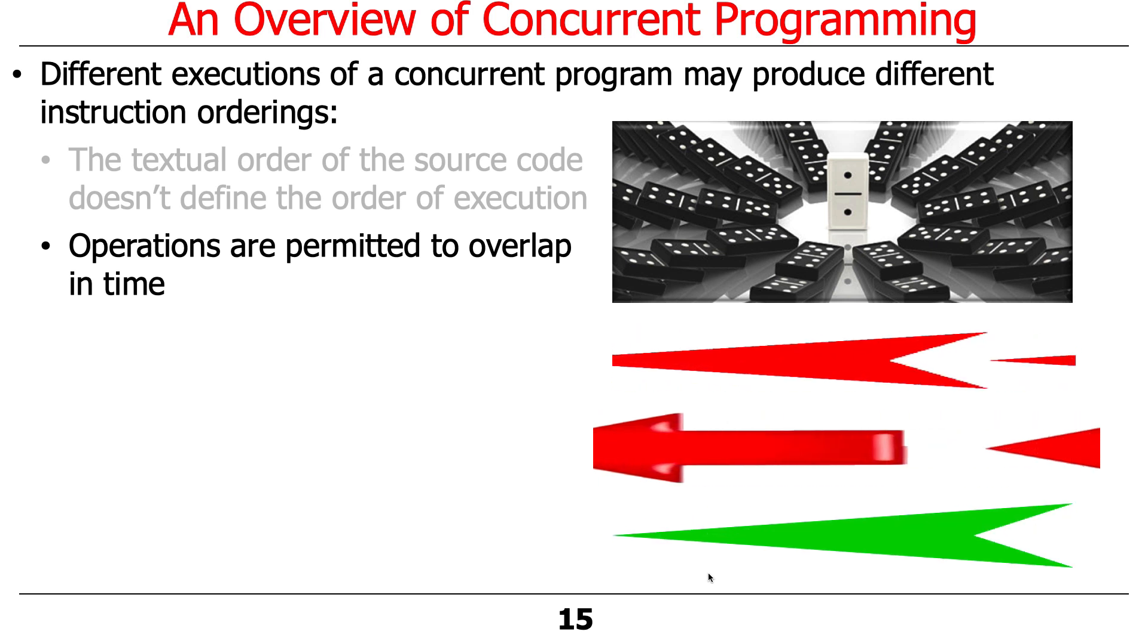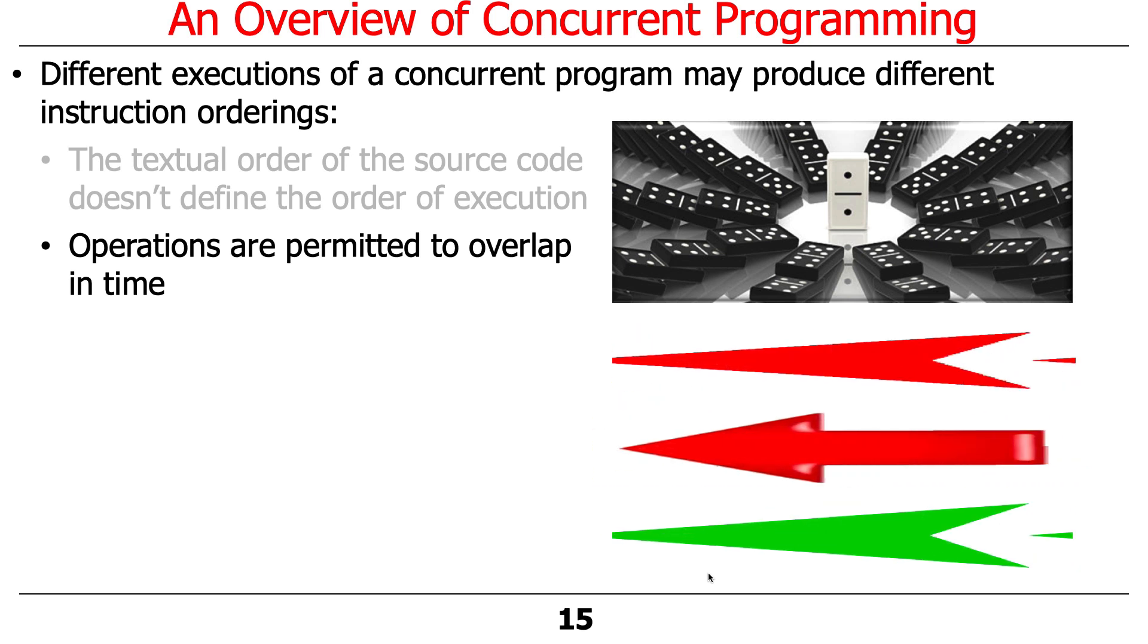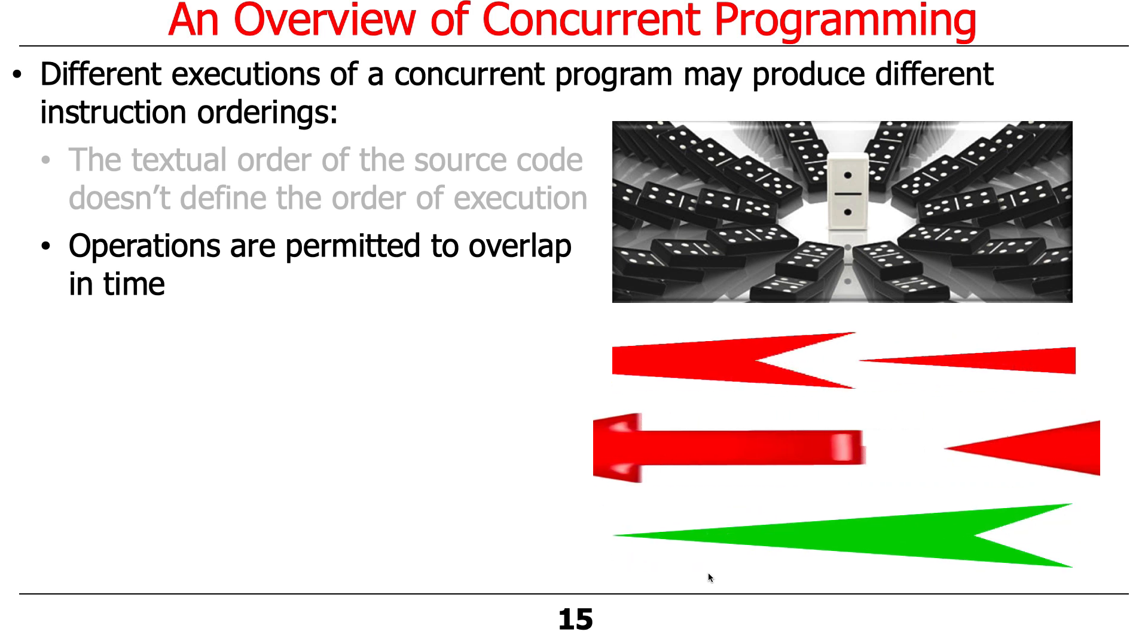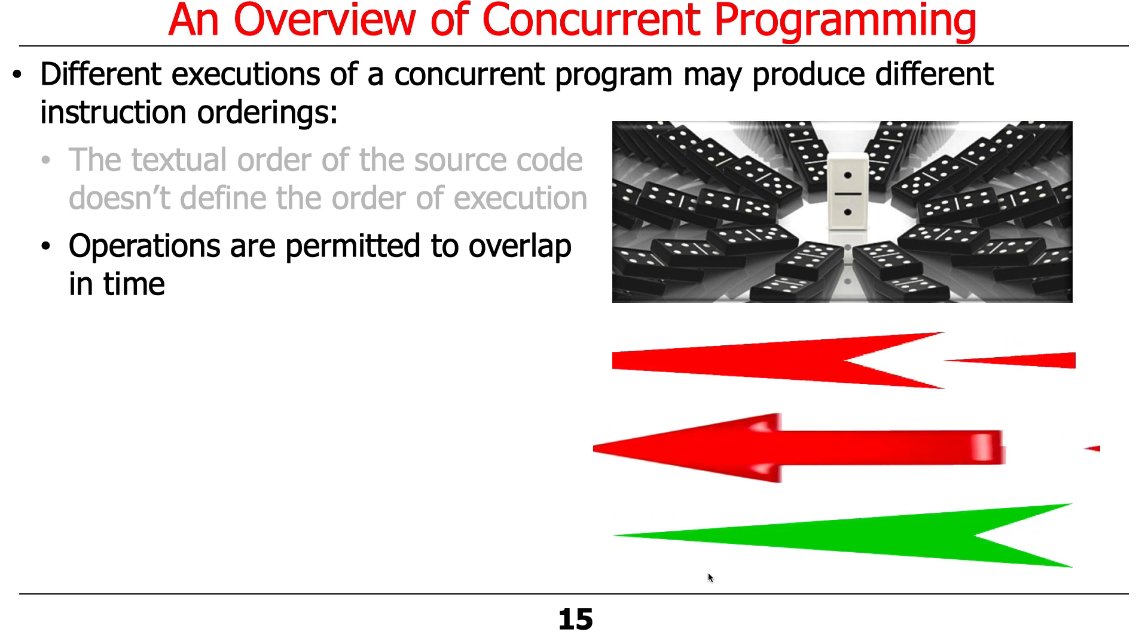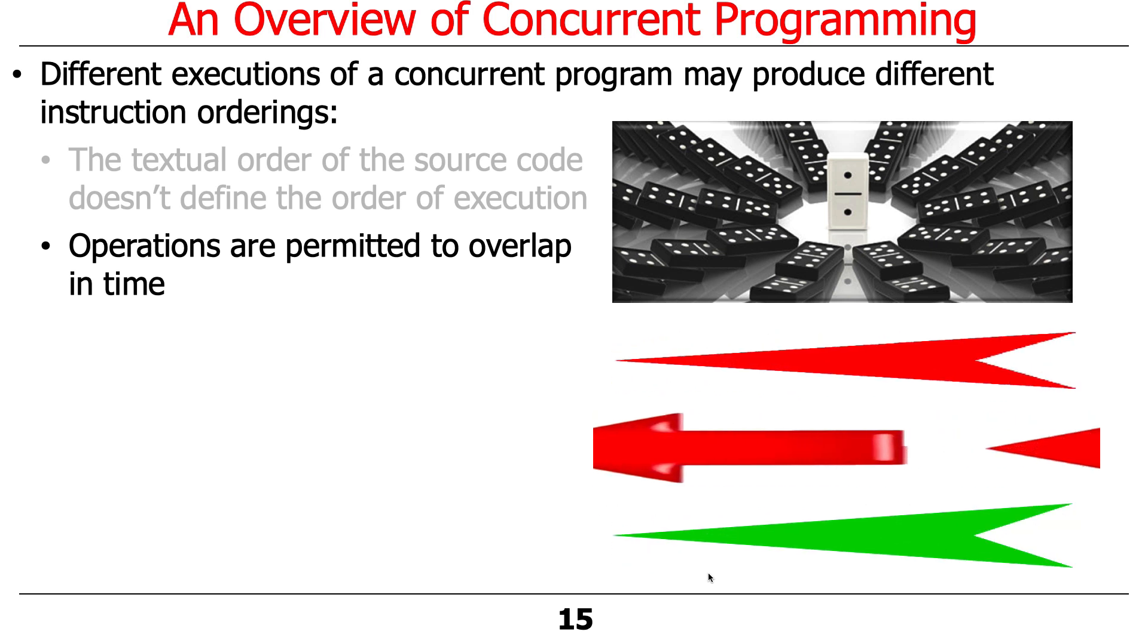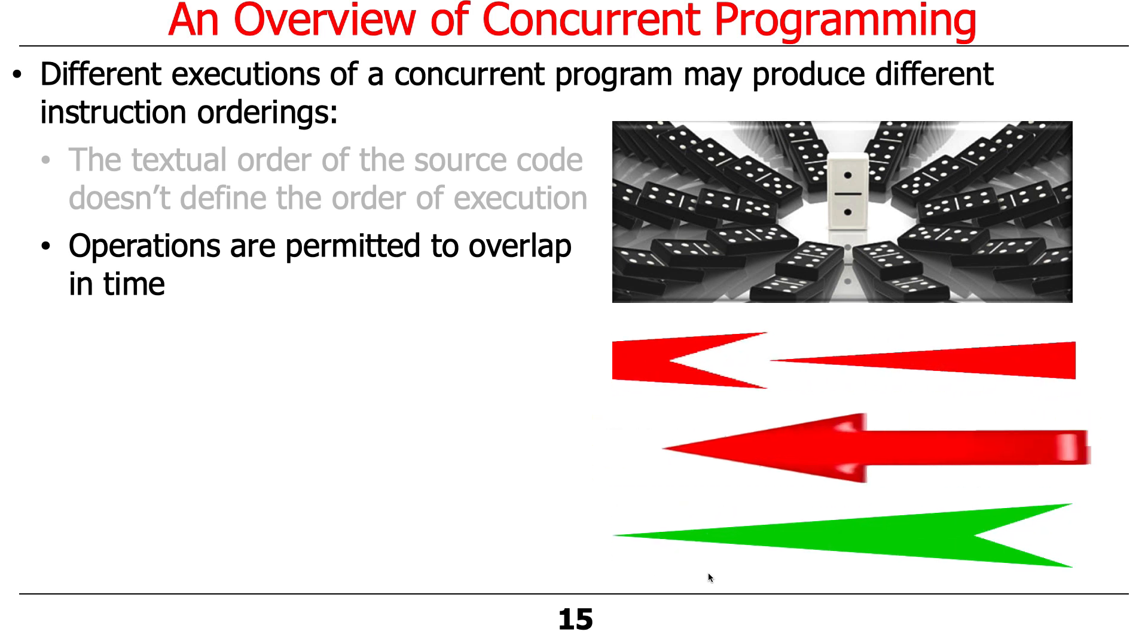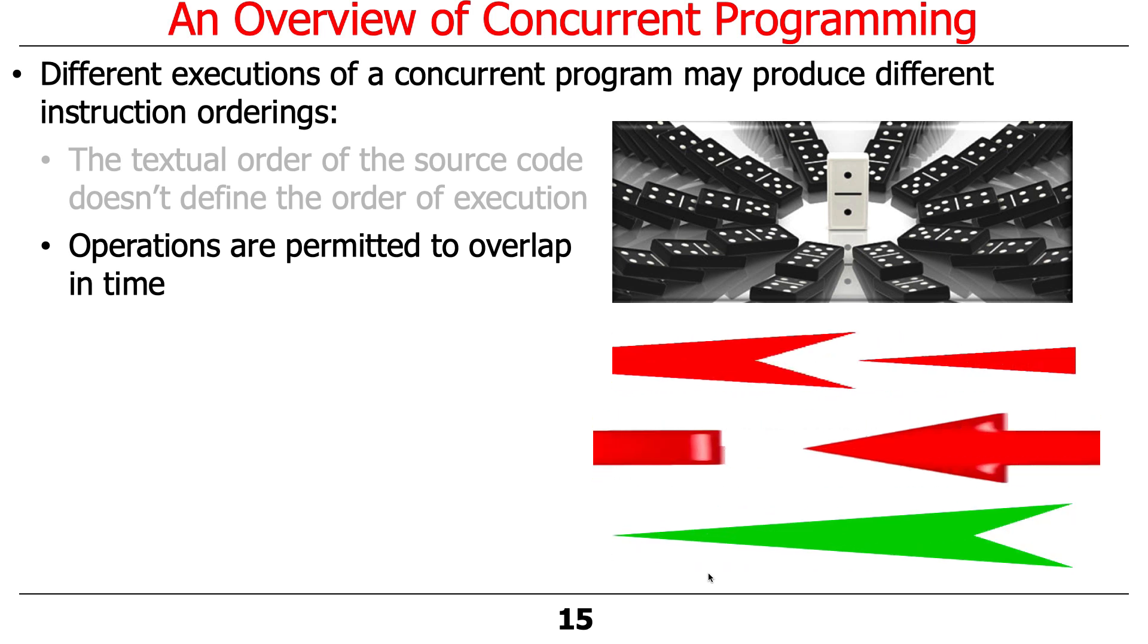More things can happen, but the system can overlap the operations in non-deterministic ways that have temporal overlap. And that is, again, both a blessing and a curse. It's a blessing because it allows us to be able to make things run faster. It's a curse because when things go wrong, you're usually scratching your chin trying to figure out what the heck is happening.